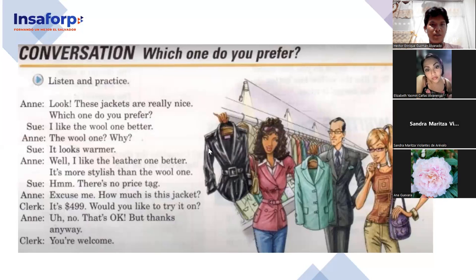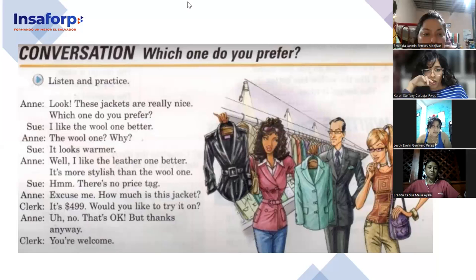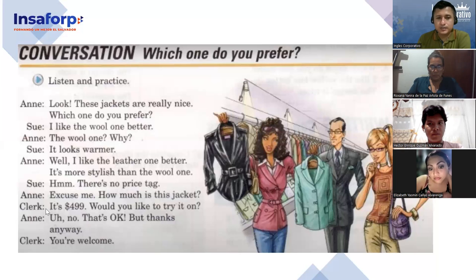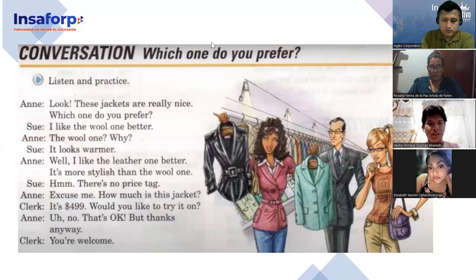Hector, you are going to be Ann. Elizabeth Jasmine, you are Sue and the clerk. Ready, let's begin. 'Look, these jackets are really nice. Which one do you prefer?' 'I like the wool one better.' 'The wool one? Why?' 'It looks warm.' 'Well, I like the leather one better — it's more stylish than the wool one.' 'There is no price tag. Excuse me, how much is the jacket?' 'It is $499.' 'Would you like to try it on?' 'No, that's okay, but thanks anyway.' 'You're welcome.' Thank you so much, very good.